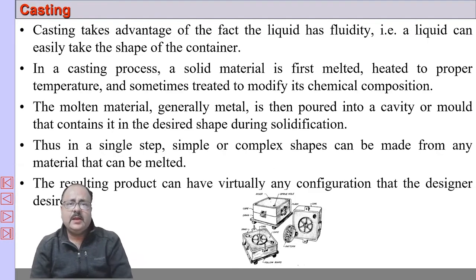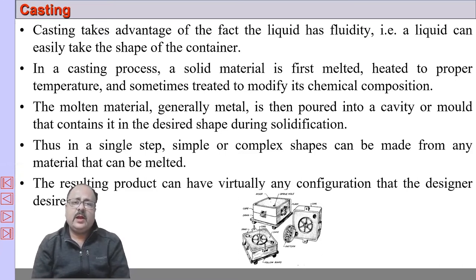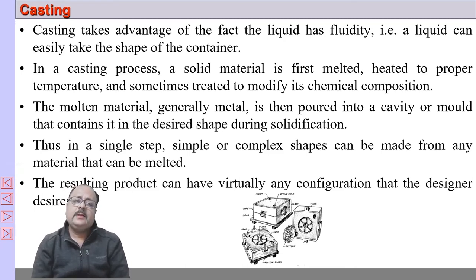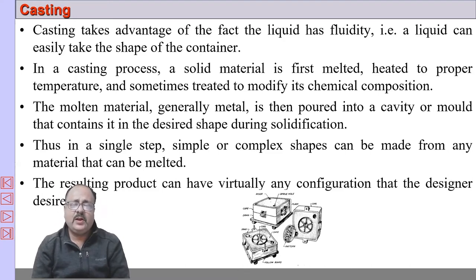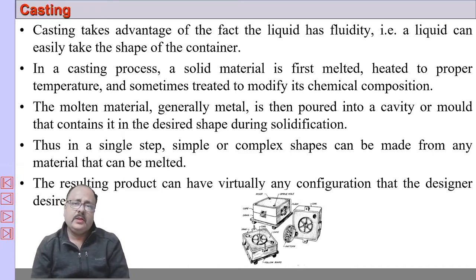Casting is basically a manufacturing process where we melt the metal and pour it into a cavity, which is created in a molding material. That cavity has the shape of the final product. We pour the molten metal into the cavity, the molten metal solidifies inside, and once it solidifies, we take it out from the molding material. The solidified metal is the product.